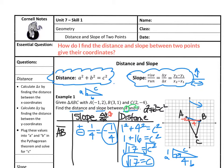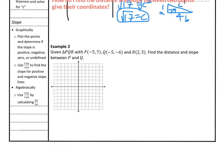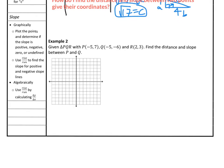Moving on to example number 2 — go ahead and pause and plot these points P, Q, and R for triangle PQR. I've plotted my three points and your triangle should look like this. It says find the distance and slope between P and Q, which goes from here all the way down to here.